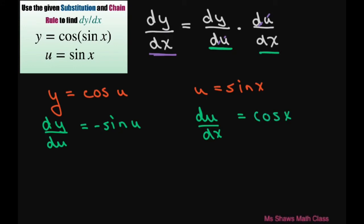Now let's multiply these two together. And this is going to give me derivative of y with respect to x equals negative sine of u times cosine of x.